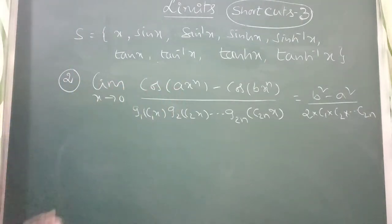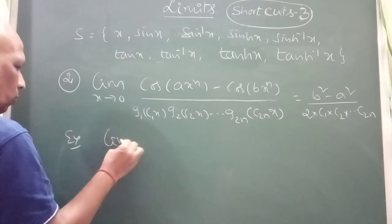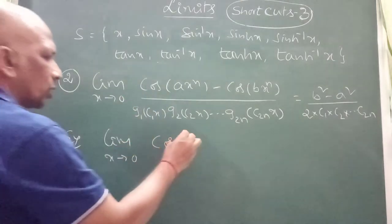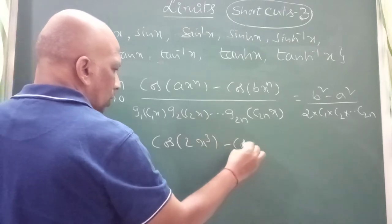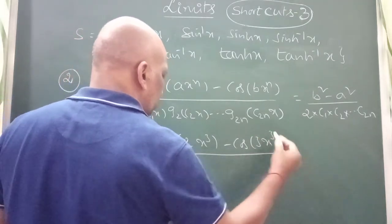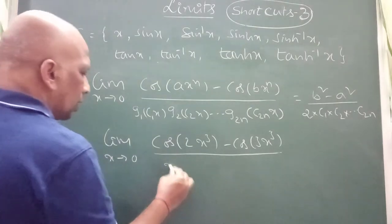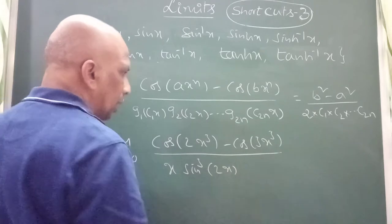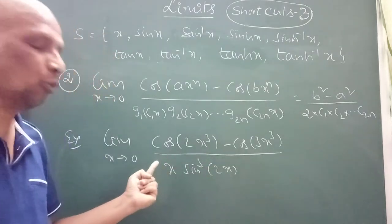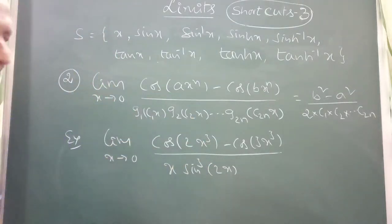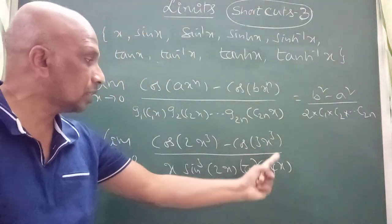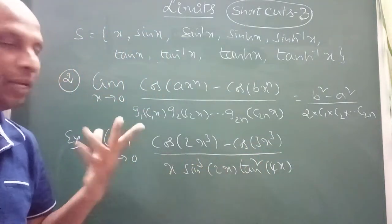Now I am going to give an example. Limit x tends to 0 of cos(2x³) minus cos(3x³) divided by a denominator with 6 factors, since n equals 3. I can write the denominator as x times sin²(2x) times tan²(4x) — that gives 1 plus 2 plus 3 equals 6 factors total. Now the answer: B is 3, so 3 squared minus 2 squared.